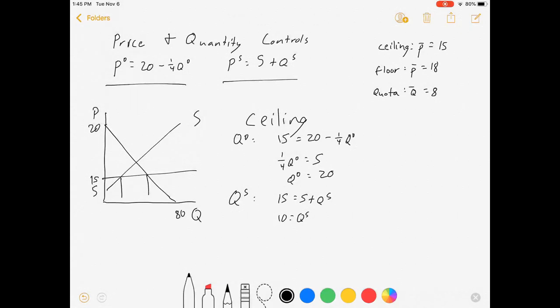And so we get quantity demanded is 20, quantity supplied is 10. Quantity demanded is greater than quantity supplied. That means we have a shortage of the good. Prices are low enough that people want to buy more than consumers want to sell. In this case, the shortage specifically is 20 minus 10 is 10 units. And so that shows up right along here. The gap between the 10 and the 20 is your shortage.